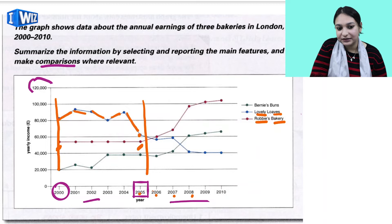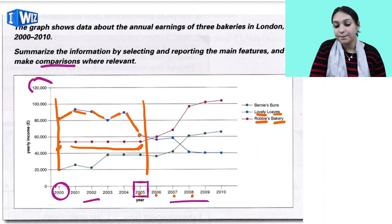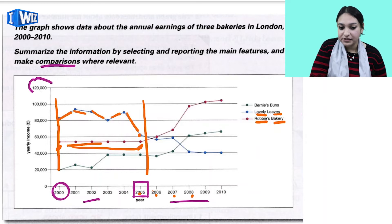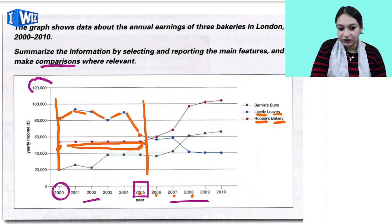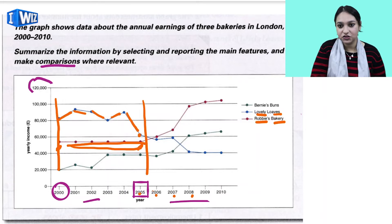This is a way to read comparisons over a five-year period. The most relevant comparisons are where there is an intersection between the companies, or where the growth of one company is stagnant while another shows growth. This is how you identify important main features in a visual representation.